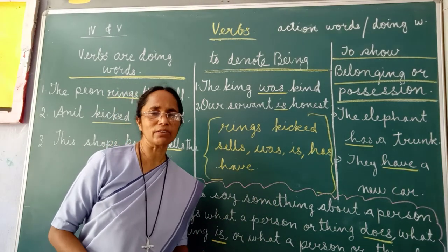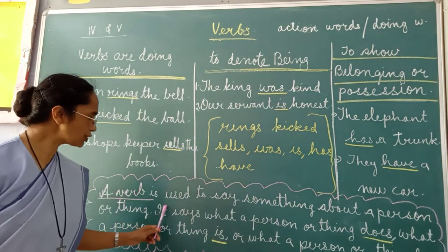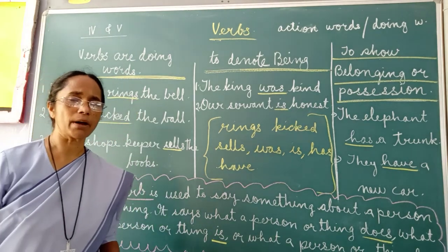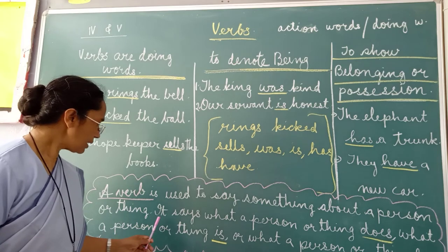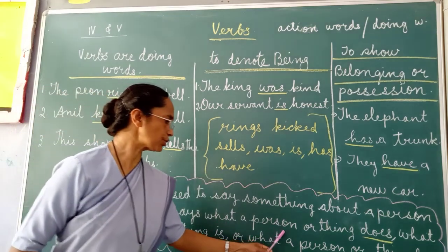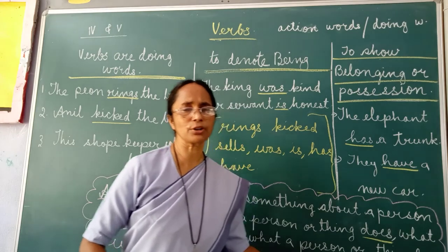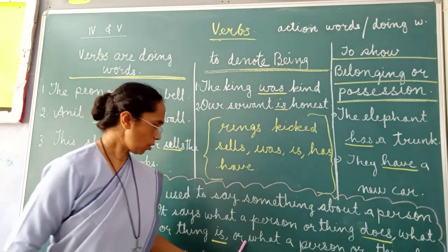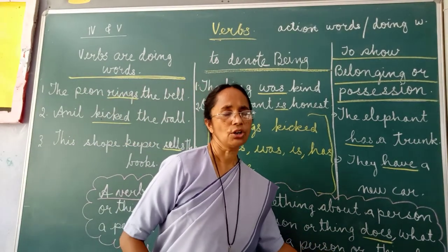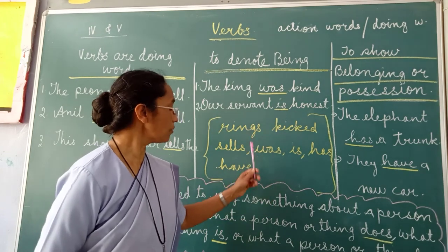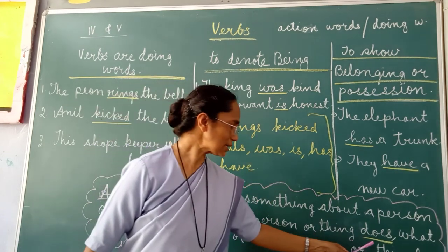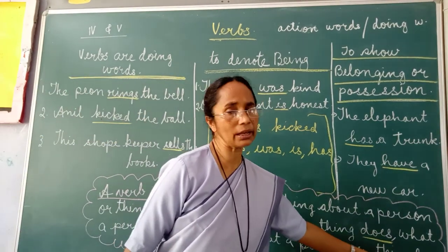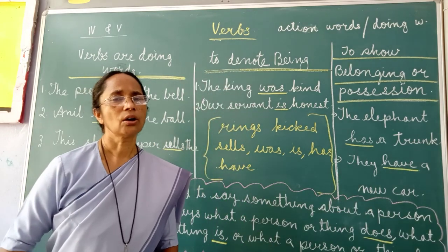So what is a verb? A verb is used to say something about a person or thing. It says what a person or a thing does, what a person or a thing is, or what a person or a thing has. So verbs tell us what the person does, what the person is, or what a person or thing has. That is called a verb.